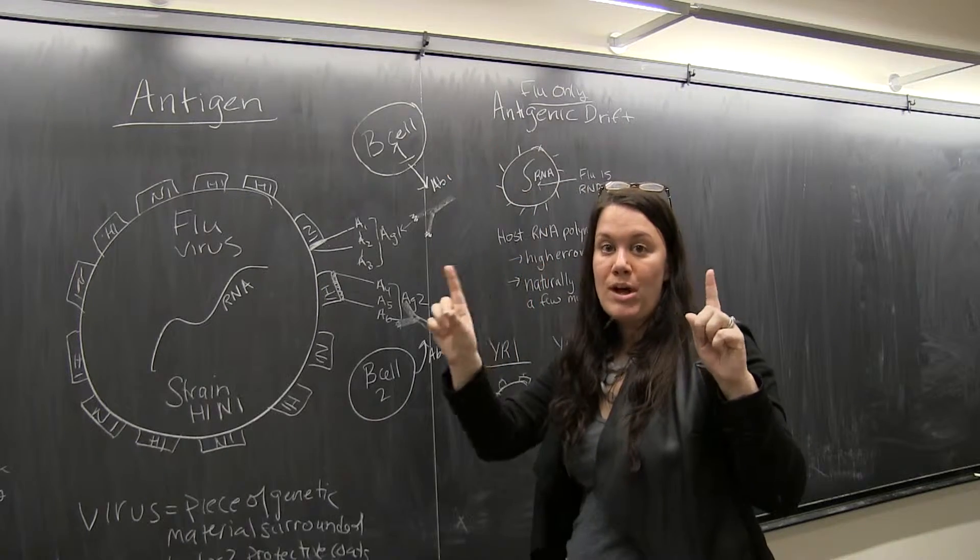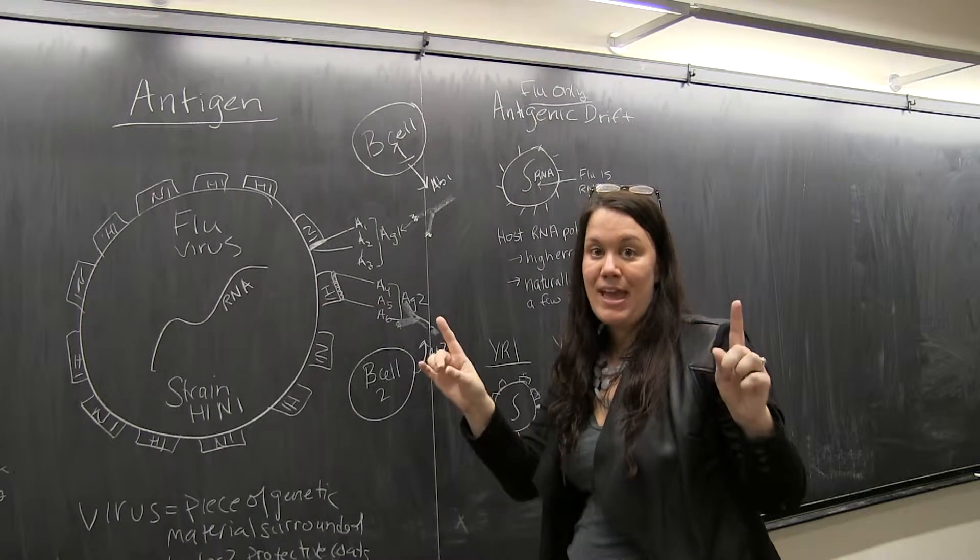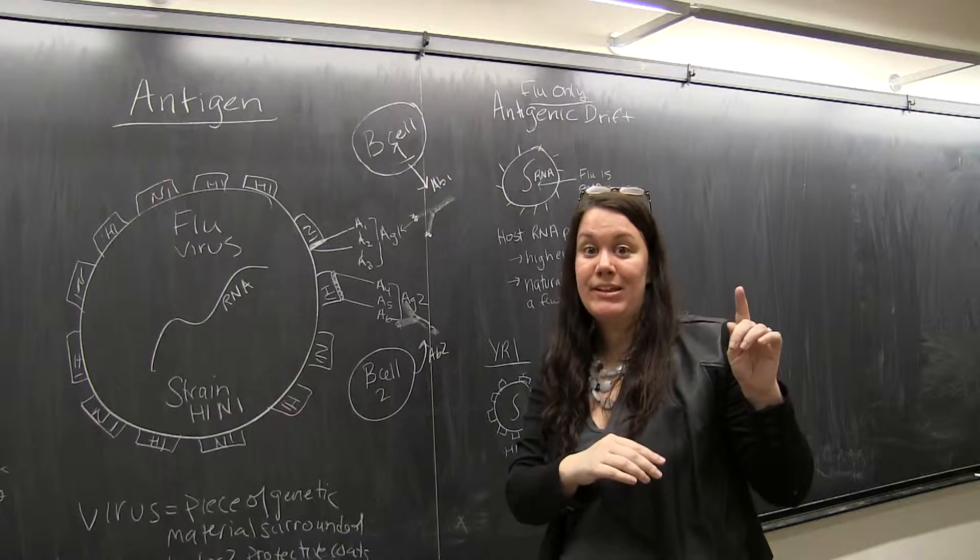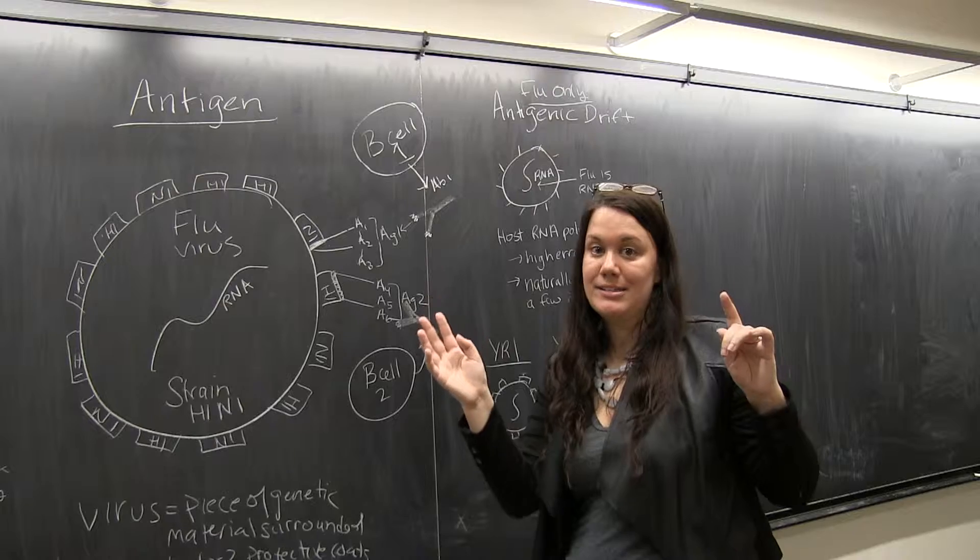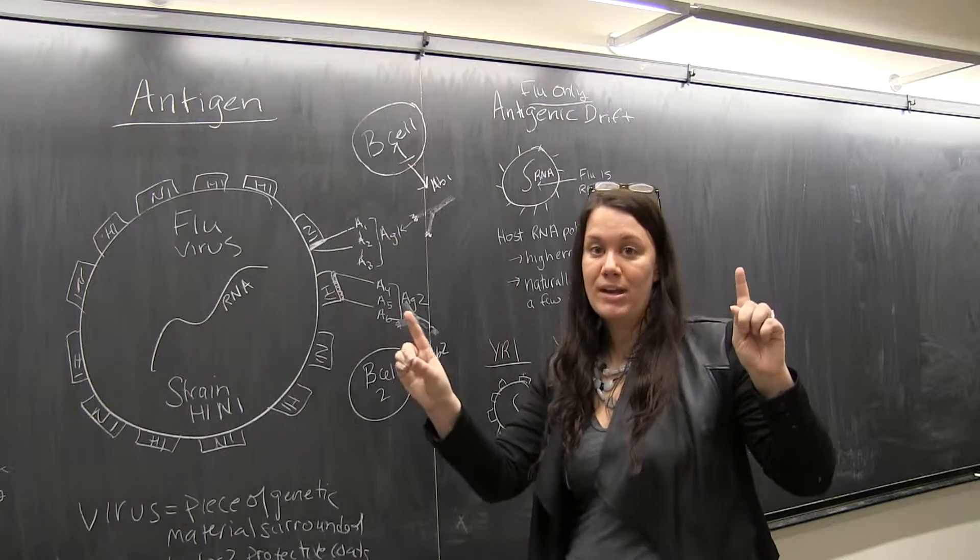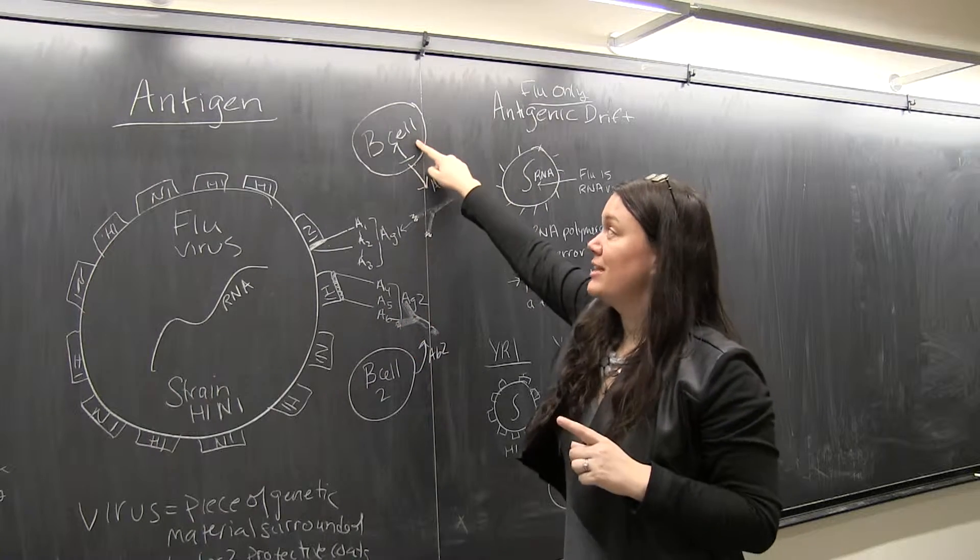So, B cells. One B cell makes one specific kind of antibody. It is not the case that one B cell makes lots of different antibodies. One B cell, one kind of antibody.